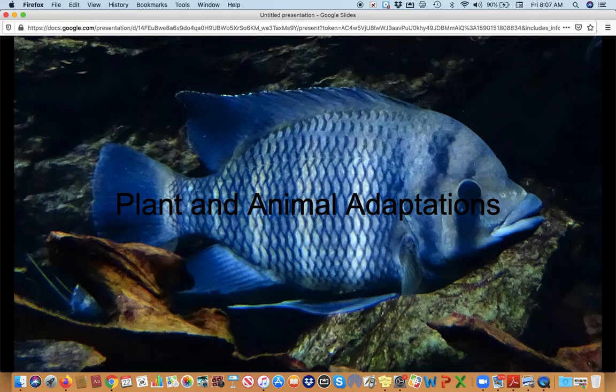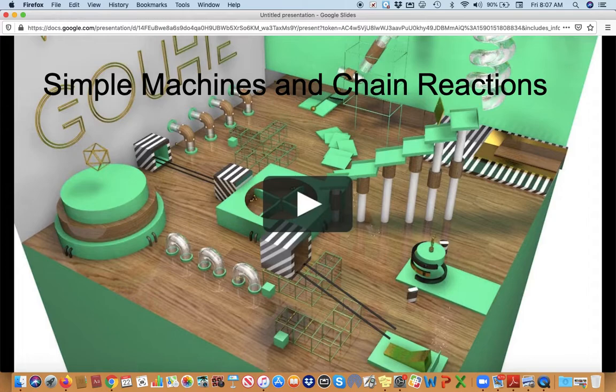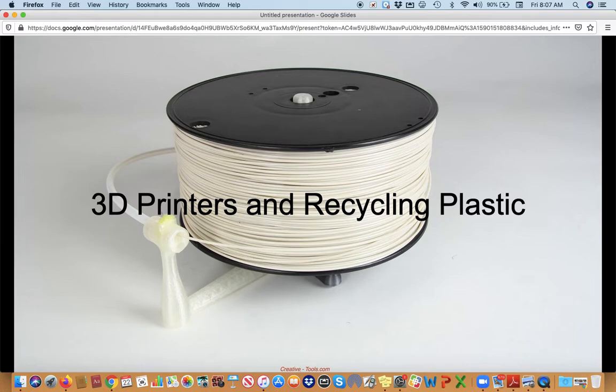And I think that's it. So that was plant and animal adaptations. Remember you guys all drew a picture of something in the classroom and those were laminated and hung around the classroom. Simple machines and chain reactions. So that's the unit where we talked about levers and pulleys and wheels, and then we made those Rube Goldberg machines which were basically chain reactions using simple machines.